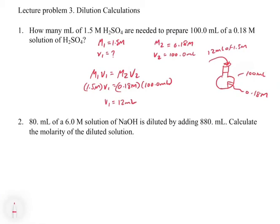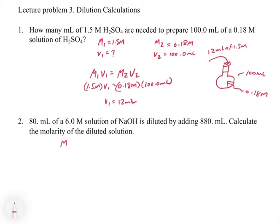Let's look at the second one. It says 80 mls of a 6 molar solution of NaOH is diluted by adding 880 mls. Calculate the molarity of the diluted solution. Let's start by writing our M1V1 and M2V2. Here's one where we have to be a little careful. Our first solution, we have 80 mls of it, and it's 6.0 molar.